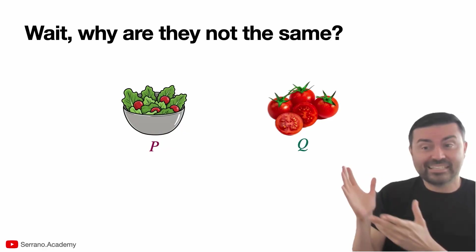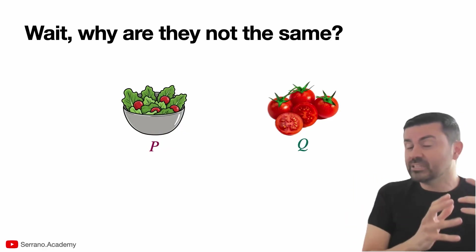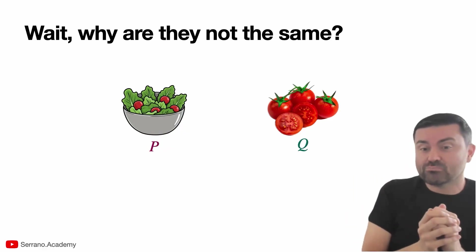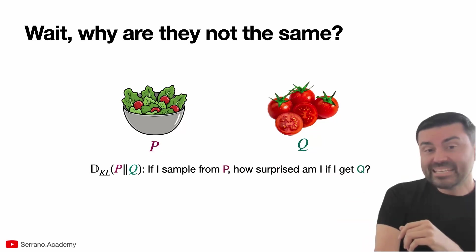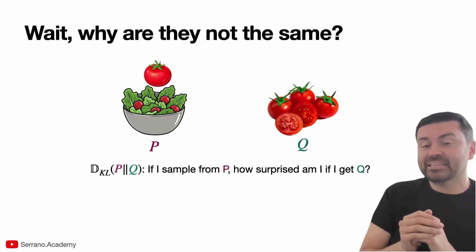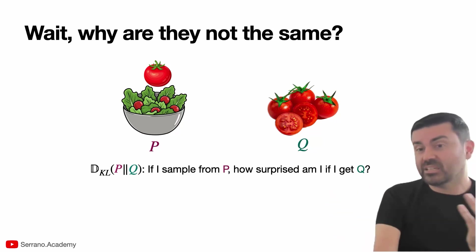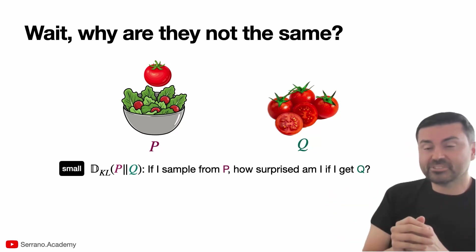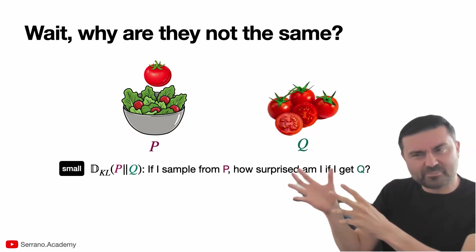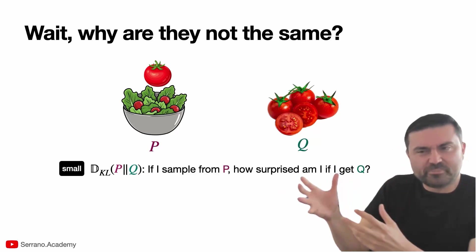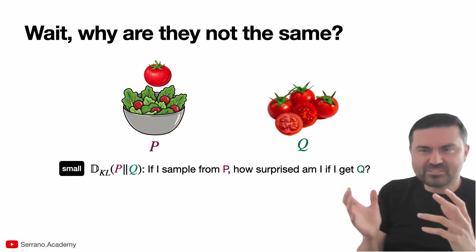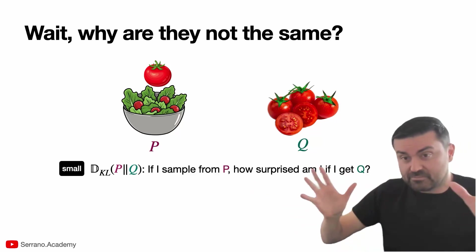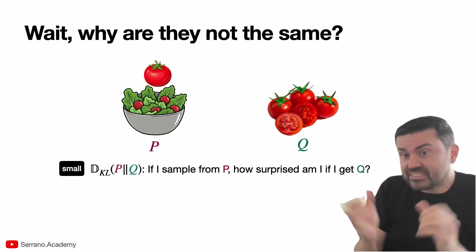Let's say that the distribution P is a salad, and the distribution Q is a bag of tomatoes. So the KL divergence of P and Q says: if I were to sample from P, so if I sample from the salad, how surprised I am if I get a tomato? Well, I'm not surprised if I get a tomato out of a salad. So this is a small KL divergence. It's a small distance. Because I could obtain Q from P. I could obtain tomatoes from pulling stuff out of a salad, and I probably wouldn't be that surprised. It may be that I get a lettuce, but if I get just tomatoes, I'm still not that surprised.